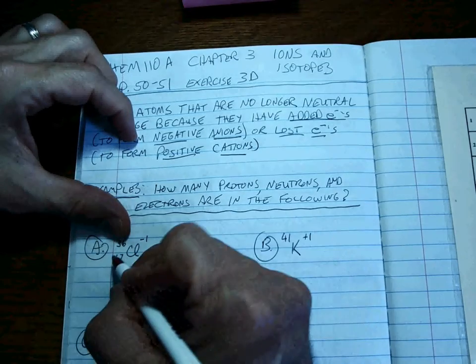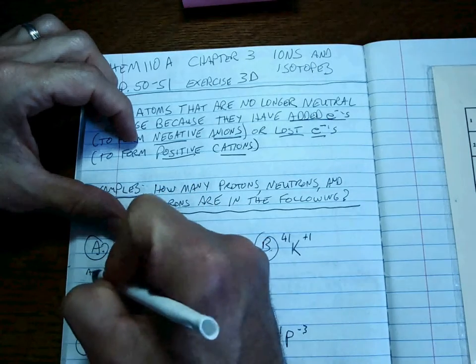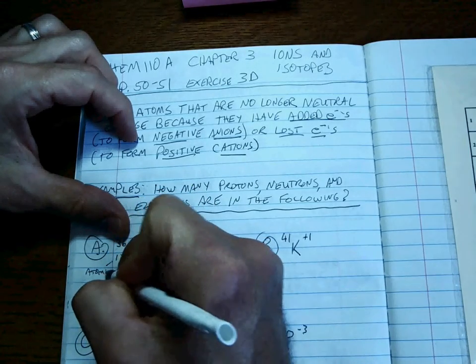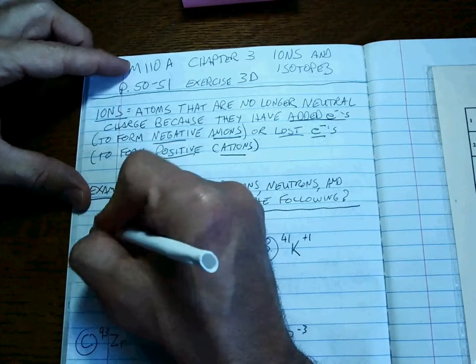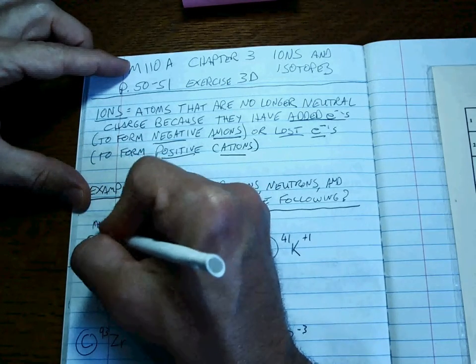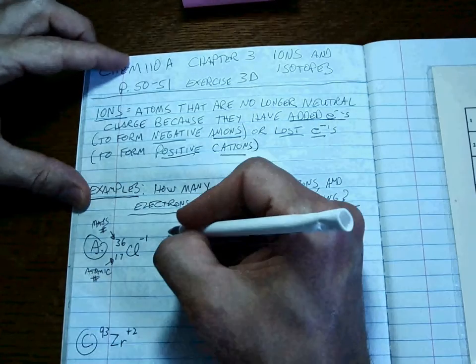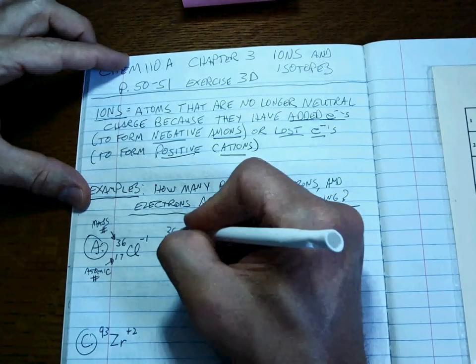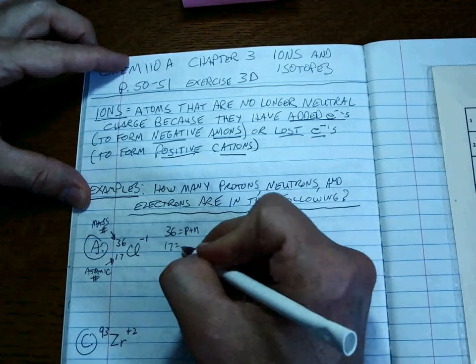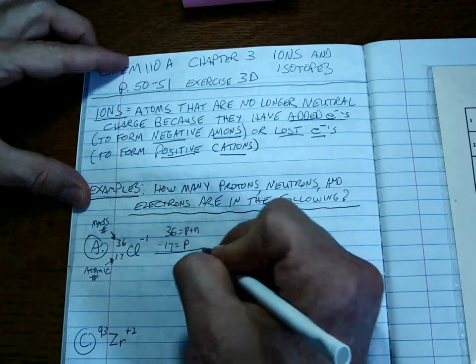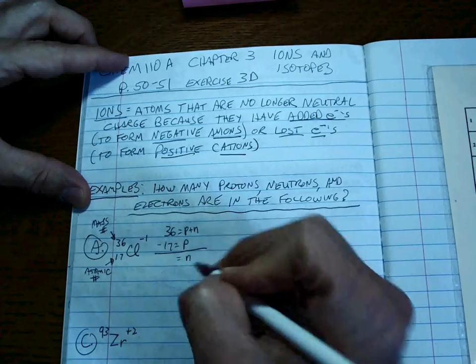If you remember, this is the atomic number and this is the mass number. The mass number is protons plus neutrons, and the atomic number is the number of protons. Subtracting the two always gives you the neutrons.